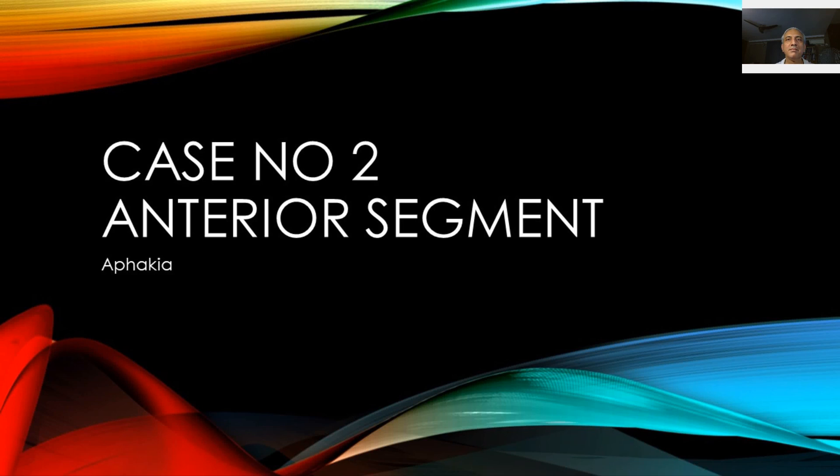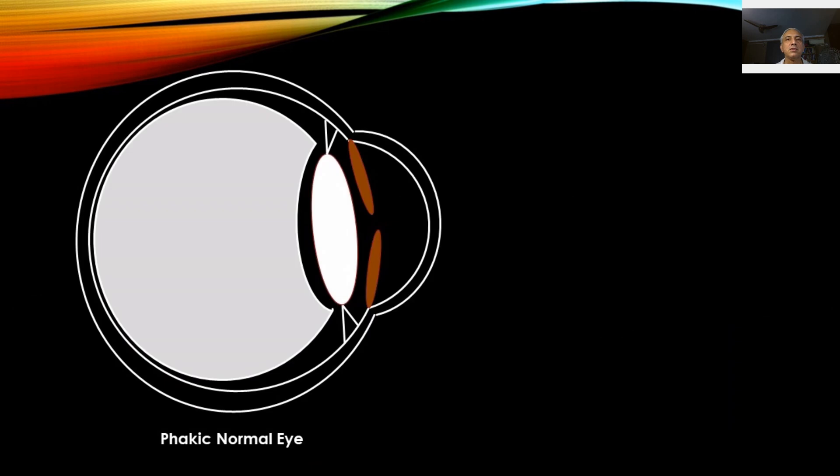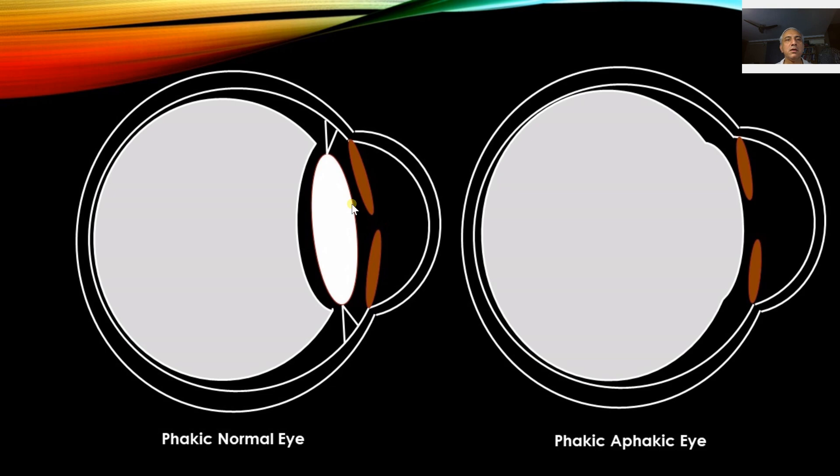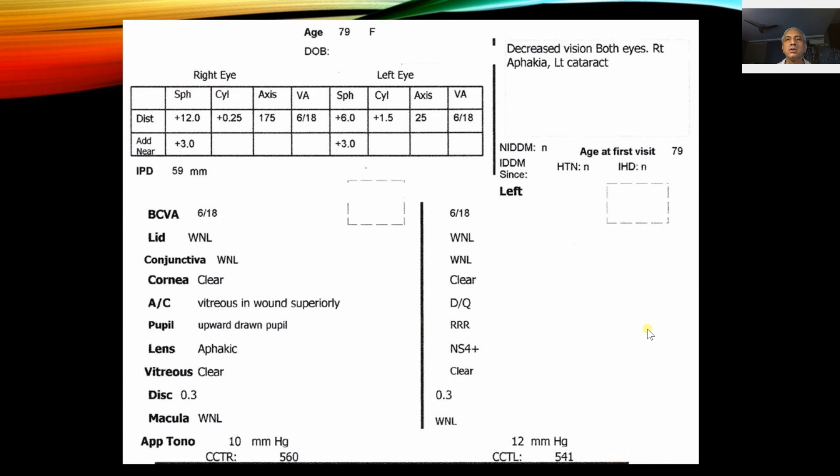This is an anterior segment examination of aphakia using slit lamp with explanations. Normally, the vitreous is shaped concave anteriorly with the lens in front of it, but when you become aphakic, the iris tends to fall backwards and the vitreous is convex forward. If there's loss of vitreous through a wound in cataract surgery, you can see the vitreous causing the iris to move upward or create an updrawn iris.